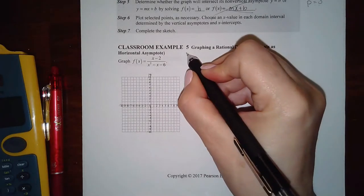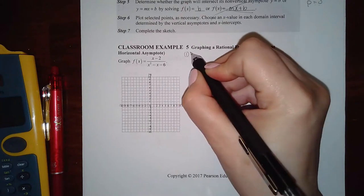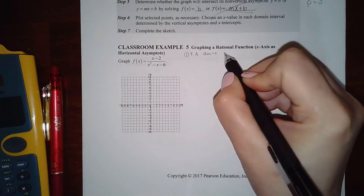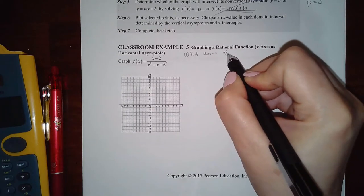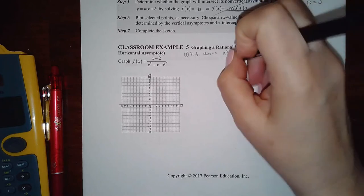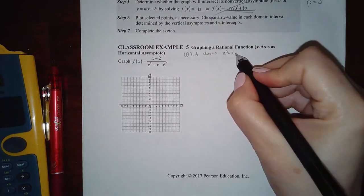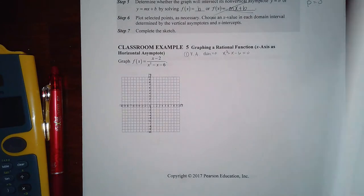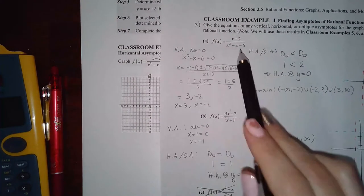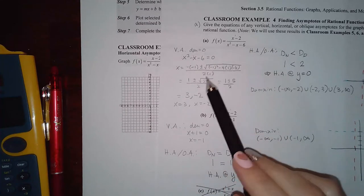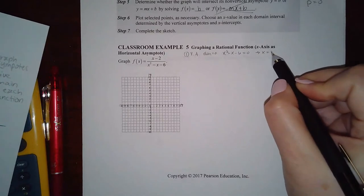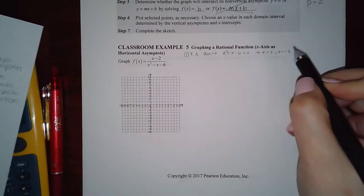Let's begin with step one: the vertical asymptotes, which means I have to set my denominator equal to zero. So in this case I have x squared minus x minus six equal to zero. We already did the quadratic formula on this function and got x equals three and x equals negative two, so I'm going to draw those vertical asymptotes.